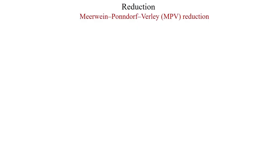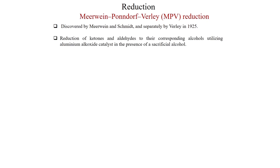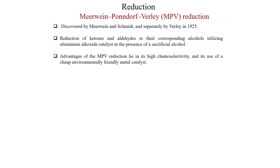Today we will discuss first MPV reduction and then metal-catalyzed hydrogenation. MPV reduction is called Meerwein-Ponndorf-Verley reduction. Discovered by Meerwein and Schmidt and separately by Verley in 1925, it is the reduction of ketones and aldehydes to their corresponding alcohols utilizing aluminum alkoxide catalyst in the presence of a sacrificial alcohol. An advantage of MPV reduction lies in its high chemoselectivity and its use of a cheap, environmentally friendly metal catalyst.